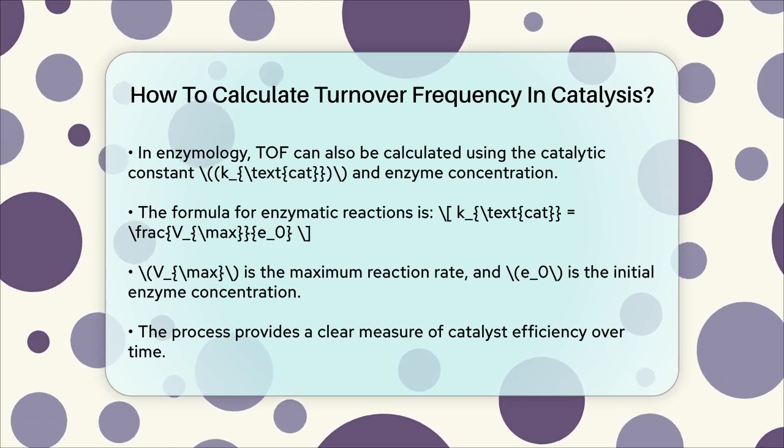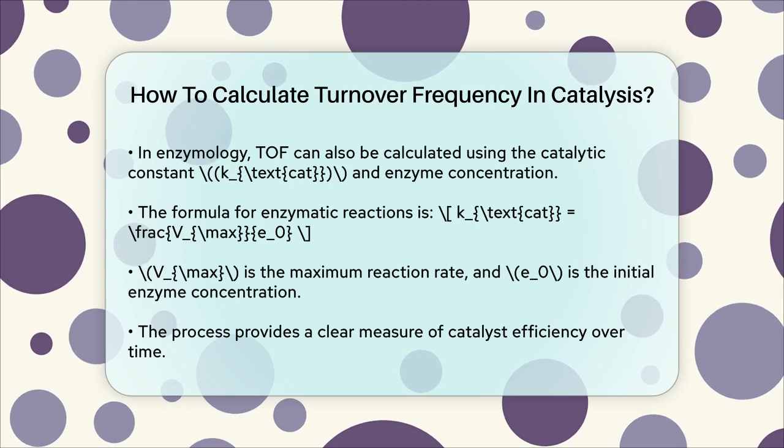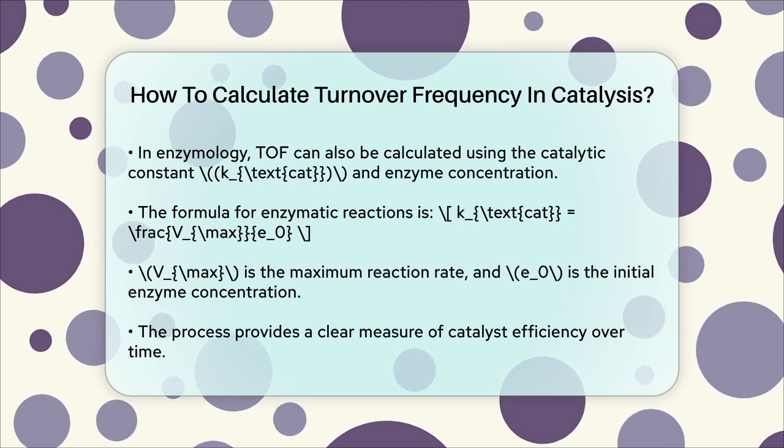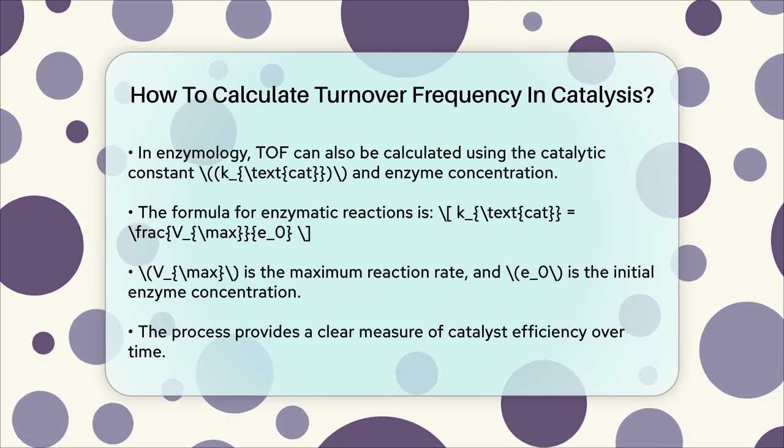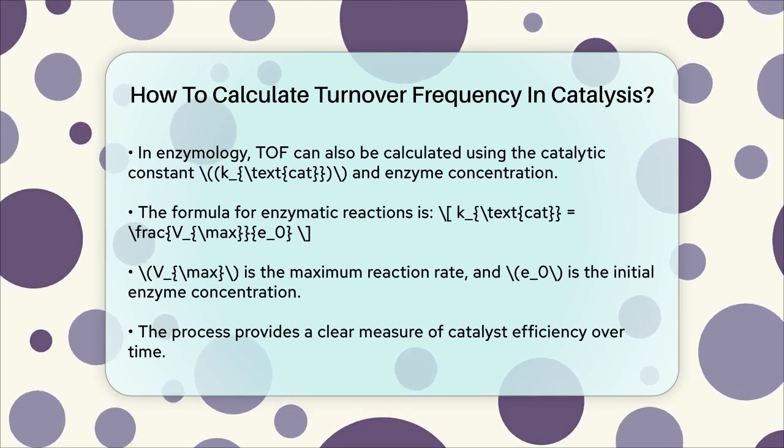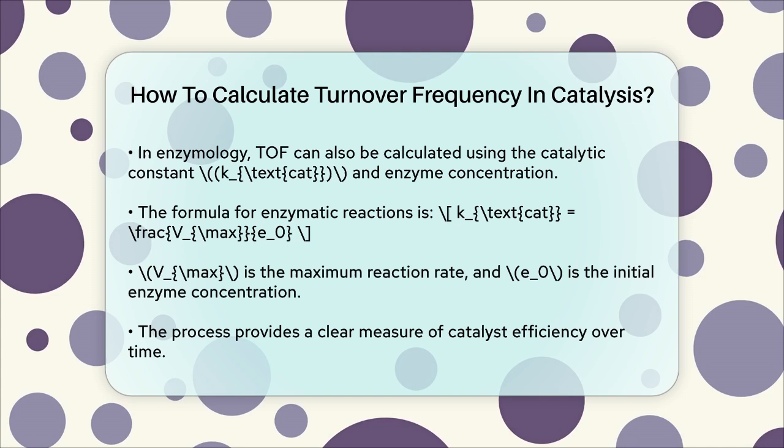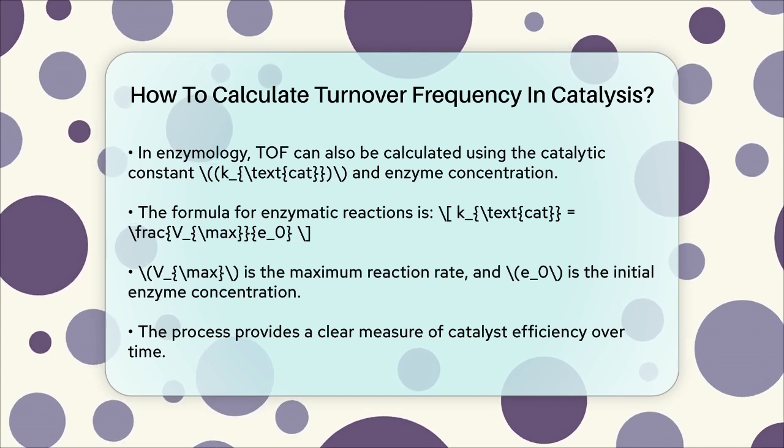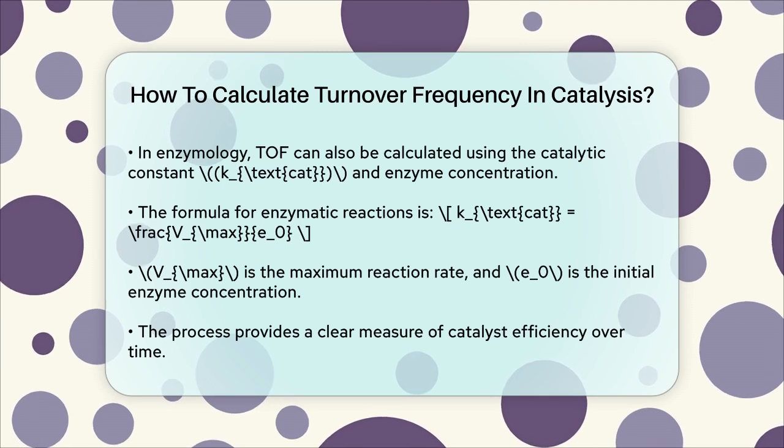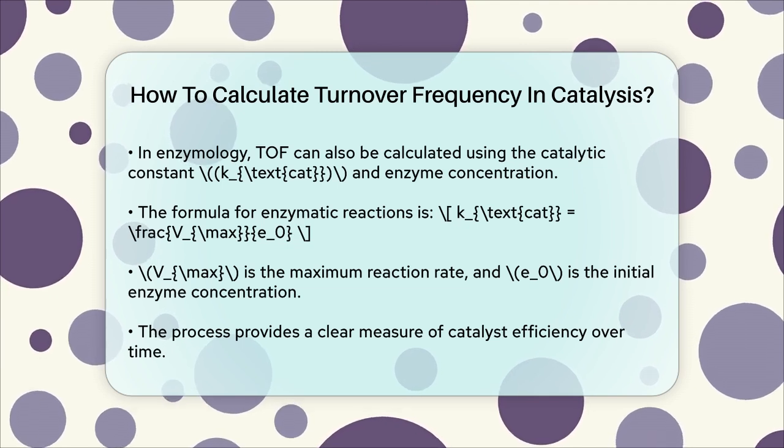In summary, to calculate the turnover frequency, you first determine the turnover number by dividing the number of moles of product by the number of moles of catalyst, considering the yield. Then you divide this turnover number by the time taken for the reaction to get the turnover frequency. This gives you a clear measure of how efficiently your catalyst is working over time.